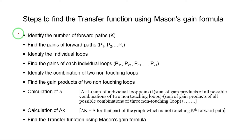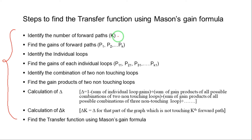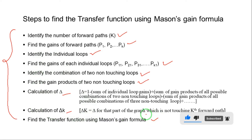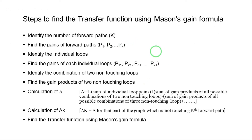There are some steps to find the transfer function from the signal flow graph. First, identify the number of forward paths and find the gains of forward paths. Then identify the individual loops and find the gains of each individual loop. Identify the combination of two non-touching loops and find the gain products of two non-touching loops. After that, calculate delta and delta k. Finally, substitute all these values in Mason's gain formula.